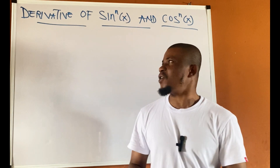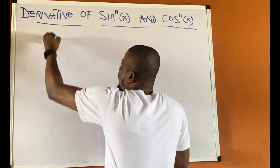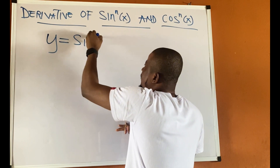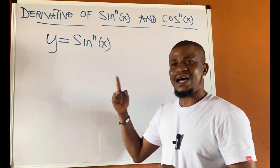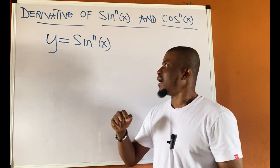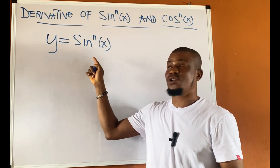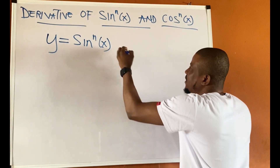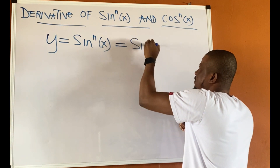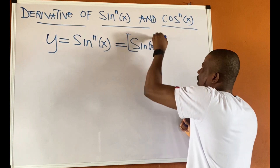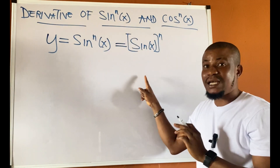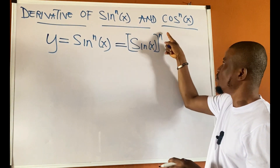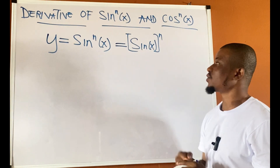If you have a function y equal to sine to the power of n of x, how do we differentiate this function? The best way is to rewrite it as a chain function — that means we write this as sine of x to the power of n. We can clearly see this as a chain function: a function inside, raised to power n. This is a chain function.